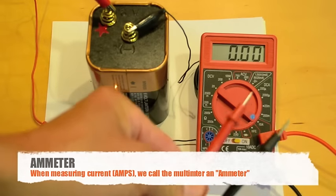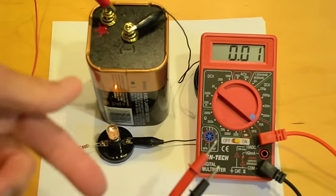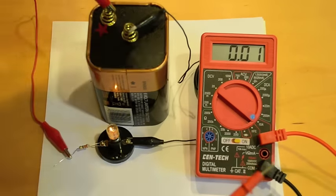So don't take the probes from the ammeter setting and put it directly to the battery. Now when I say ammeter that's a meter that's measuring amps or current.